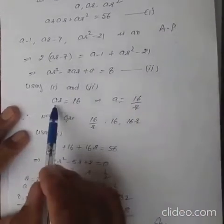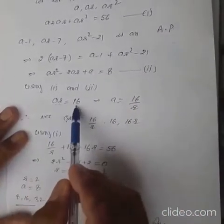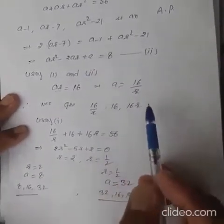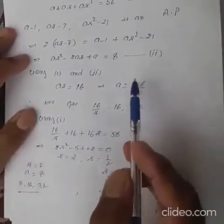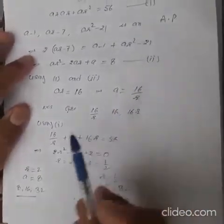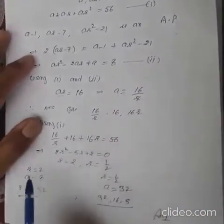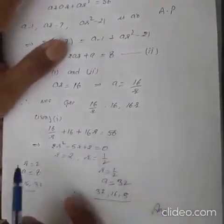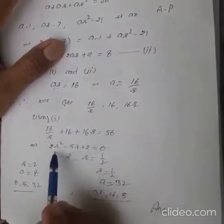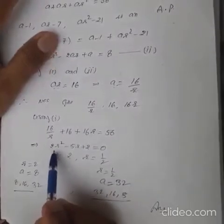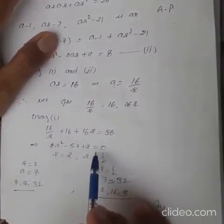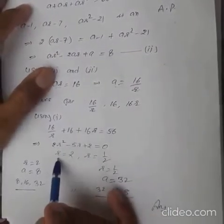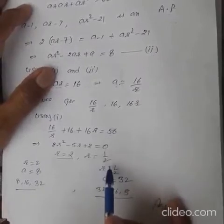Solving equations 1 and 2, we find AR equals 16, so A equals 16 upon R. Substituting the value of A into the first equation gives 16 upon R plus 16 plus 16R equals 56. After taking LCM and simplifying, the quadratic equation is 2R squared minus 5R plus 2 equals 0. Factorizing by splitting the middle term gives R equals 2 or R equals 1 by 2.